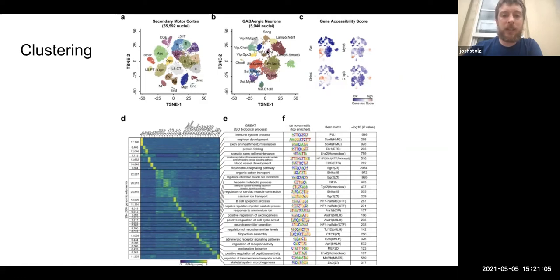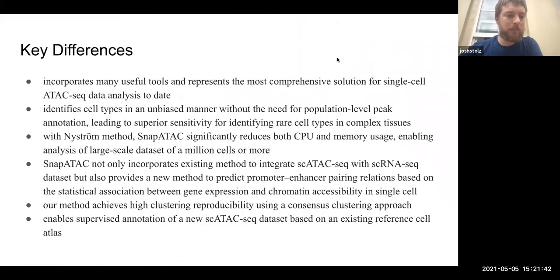Up here at top they've got two different data sets just to show they could do this in complex tissues. This is secondary motor cortex with about 55,000 cells. What you can see is it's actually able to cluster them fairly well and again we're able to use gene accessibility. B and C are the same graph and you can see that some genes are only accessible in some cell types.